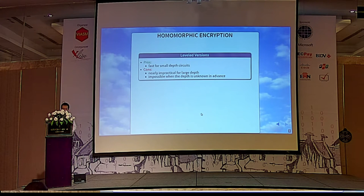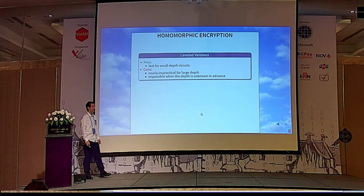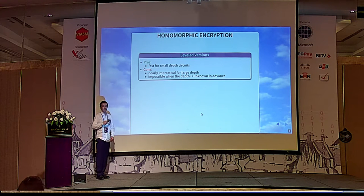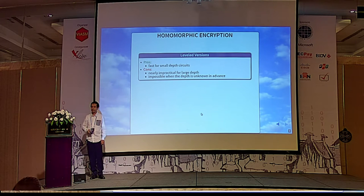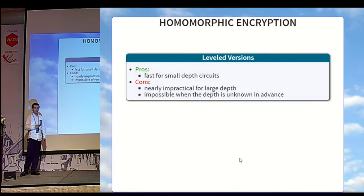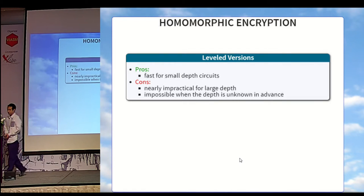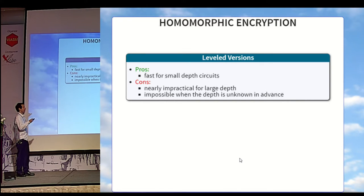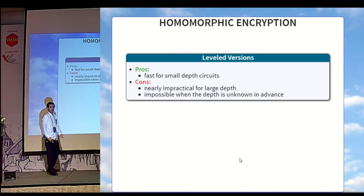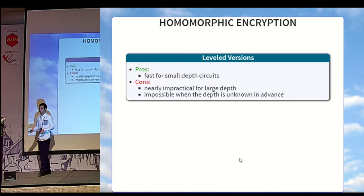Against this noise problem, there are two classical techniques. The first one is leveled encryption. Basically, you choose the parameters of the system large enough, so that after the last gate, the plaintext is still decryptable. Of course, it is very good for small depth circuits, but it becomes totally impossible if the depth is unknown in advance. Like it would be the case if you want to encrypt a dynamic database on the cloud.